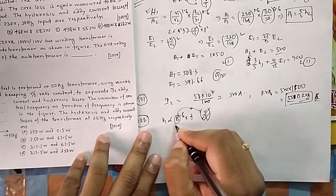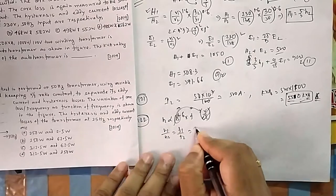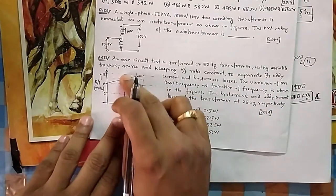You know your hysteresis loss is directly proportional to B to the power 1.6 times f. Now B is equal to V by f. B is directly proportional to V by f. Now this V by f is kept constant, that means your B is kept constant. So your H1 by H2 will be only f1 by f2 whole square.